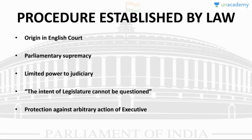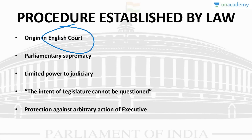Article 21 reads: 'No person shall be deprived of his life or personal liberty except according to the procedure established by law.' Procedure established by law originated in the English courts and means that a law duly enacted by the legislature or the concerned body is valid if it has followed the correct procedure. In the English system of unwritten constitution, Parliament is supreme, and this doctrine confers limited powers in the hands of the judiciary.